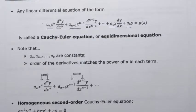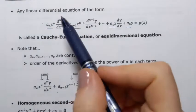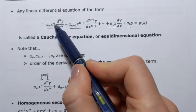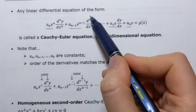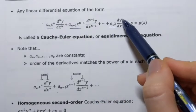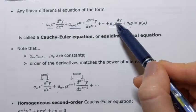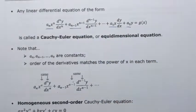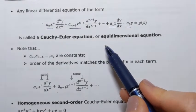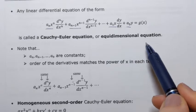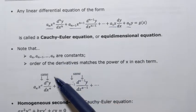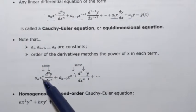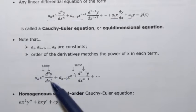What's important to note is that the power of x matches the order of the derivative. The nth derivative has power n, order n minus 1 has power n minus 1, and the first derivative has power 1. That's what distinguishes a Cauchy-Euler equation. By the way, another name for it is the equidimensional equation.